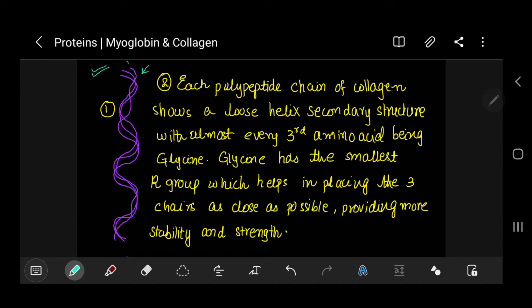Each polypeptide chain shows a loose helix secondary structure with almost every third amino acid being glycine. The reason behind this is because glycine has the smallest R group which helps in placing the three chains as close as possible, and this provides more stability and strength.